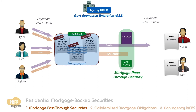The interest payment also gets passed through to the investors. However, not all of it is paid to the investors. A portion of it will go to pay servicing or other fees, like the insurance fee for the credit guarantee by the GSE. The actual rate that gets passed through to the investors is known as the pass-through rate. So for example, if the fees amount to 0.5%, Mario and Kim shall get a pass-through rate of 9.5%.